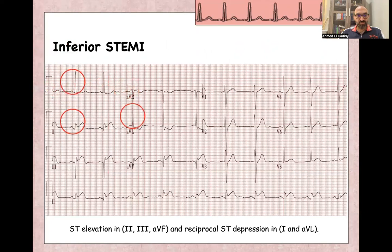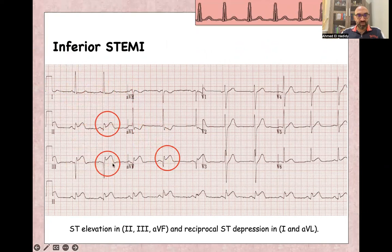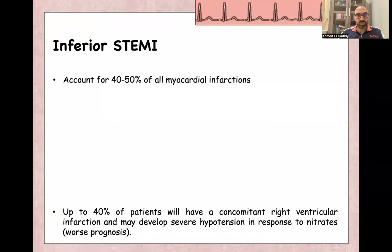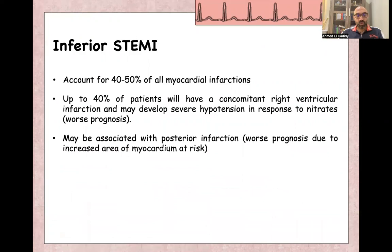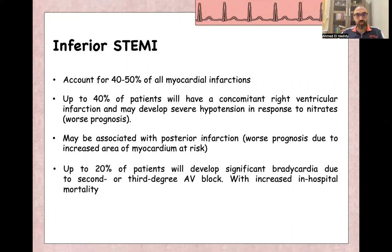Inferior ST elevation myocardial infarction shows ST elevation in leads 2, 3, and AVF, with reciprocal changes in lateral leads such as AVL and lead 1. Inferior STEMI accounts for 40 to 50% of myocardial infarctions. Up to 40% of patients will have right ventricular infarction, which can cause severe hypotension in response to nitrates — so nitrates are contraindicated if right ventricular infarction is suspected. Inferior STEMI may also be associated with posterior wall infarction, and up to 20% will develop significant bradycardia, with second or third degree AV block increasing in-hospital mortality.